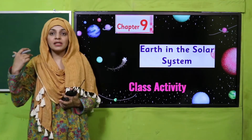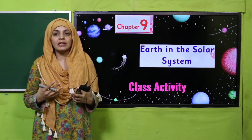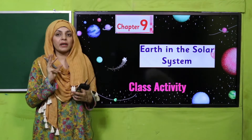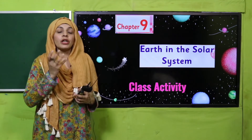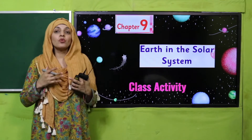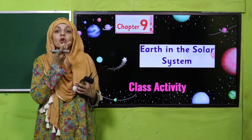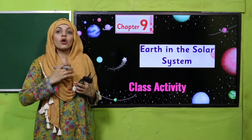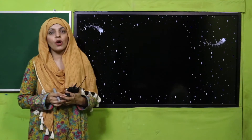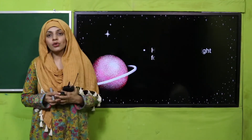We are carrying on a class activity related to previous SLOs. In the previous lecture, we discussed day and night formation - how many movements the Earth has: rotation on its axis and movement around the Sun. We are now discussing rotation on the axis, and let's quickly recap what we have done in the previous lecture.